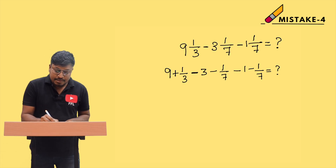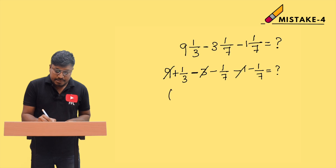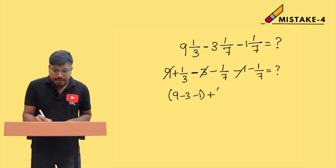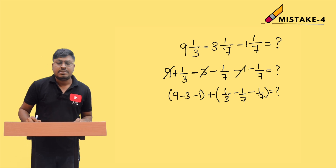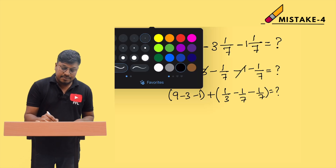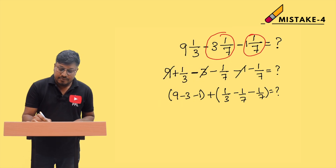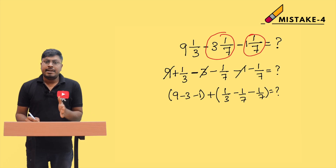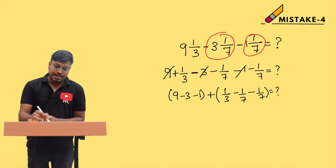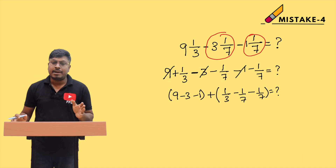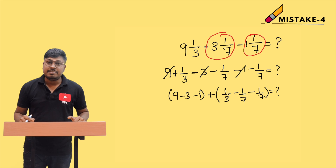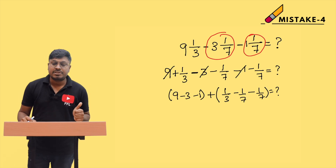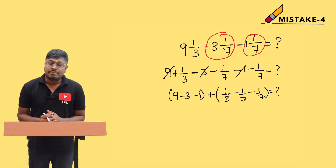Solving becomes simple: take the integers — 9 minus 3 minus 1 — and the fraction part — 1/3 minus 1/7 minus 1/7. Then take LCM and find the answer. The key mistake most students make is writing minus 1 and 1/7 as minus 1 plus 1/7. Don't do that — the minus is common for both numbers. Always write minus 1 minus 1/7. Practice more questions to avoid this mistake consistently.